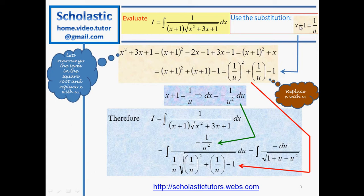Differentiating both sides of x plus 1 equal to 1 over u, we get dx equal to the derivative of u to the negative 1, which is negative 1 times u to the negative 2, that is negative 1 over u squared du. Now we substitute all values: x plus 1 is replaced by 1 over u, the term inside the square root is replaced by 1 over u squared plus 1 over u minus 1, and dx is replaced by negative 1 over u squared du.